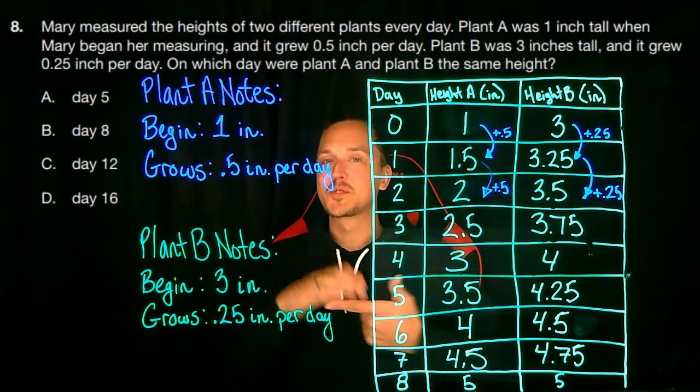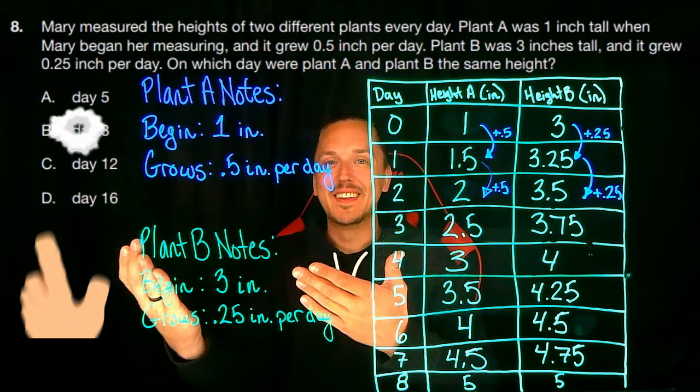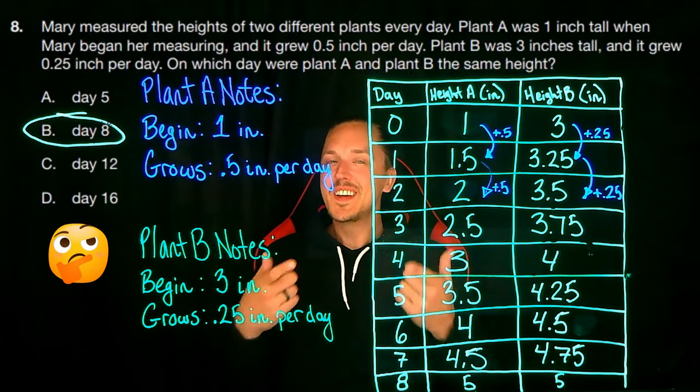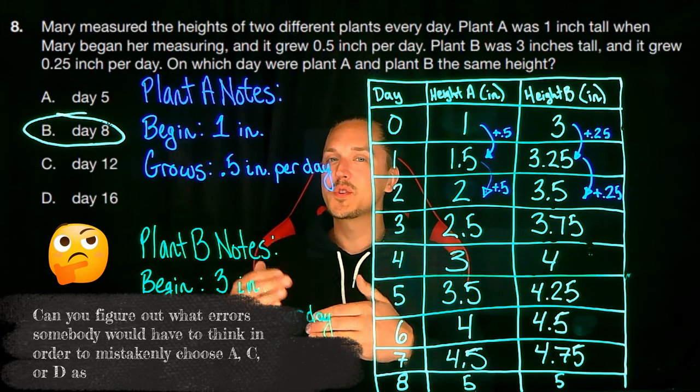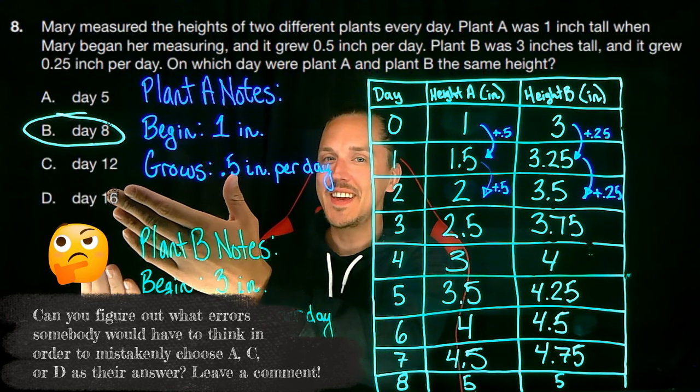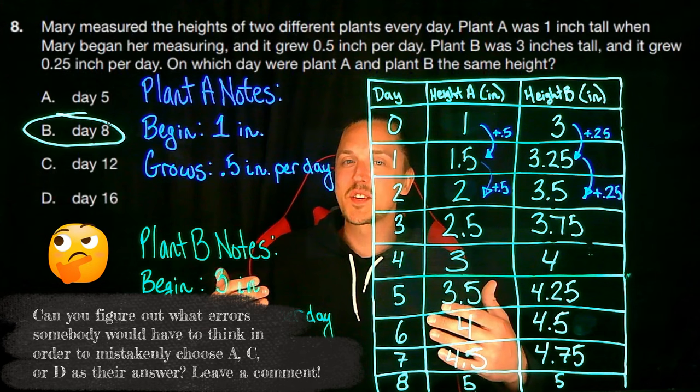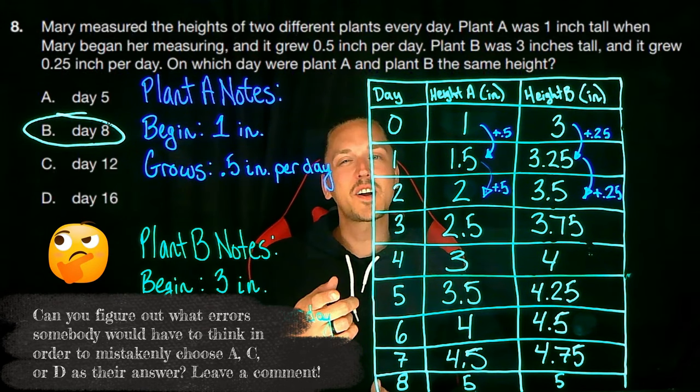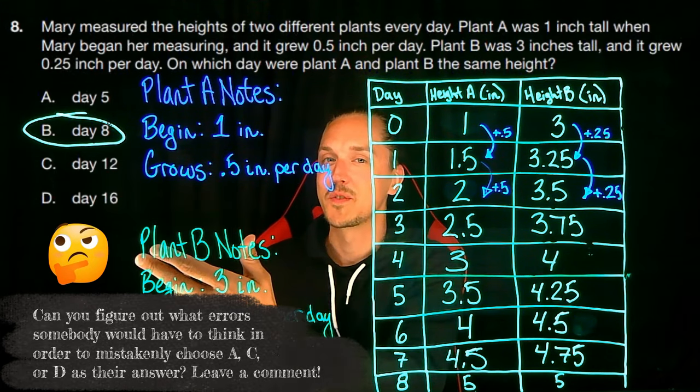Wow! By carefully observing, noting, and reasoning, we can see now that the answer is B. This is fantastic, but let's challenge ourselves further. Can you figure out what error somebody would have to think in order to mistakenly choose A as their answer? What about C or D? I hope you choose to challenge yourself to practicing your adaptive thinking skills by wrapping your head around these potential errors. Leave a comment with your thoughts. Bonus if you can recognize the errors in all three options for mistakes.